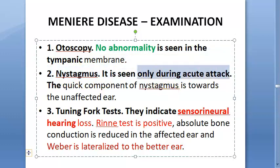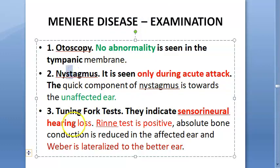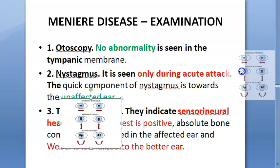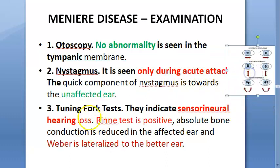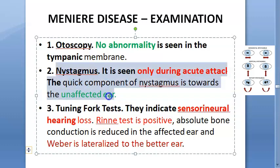During the acute vertigo attack, nystagmus is present and the quick component of nystagmus is directed towards the unaffected ear. Nystagmus involves repetitive uncontrolled eye movements — it can be horizontal, vertical, or rotatory. This nystagmus only occurs during the acute attack.